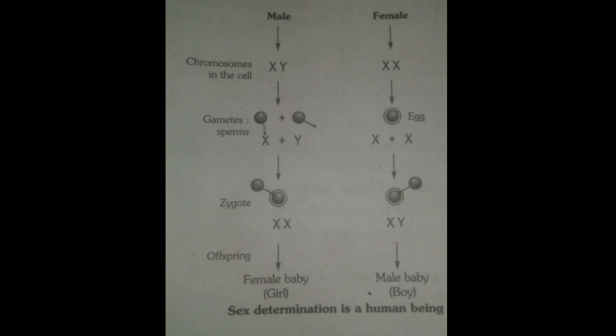Half of the male gametes carry an X chromosome and half carry a Y chromosome. But all female gametes carry only the X chromosome. So when a sperm fertilizes an egg, certain situations become possible.